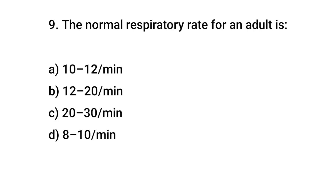Question No. 9. The normal respiratory rate for an adult is? The right answer is B. 12 up to 20 per minute.